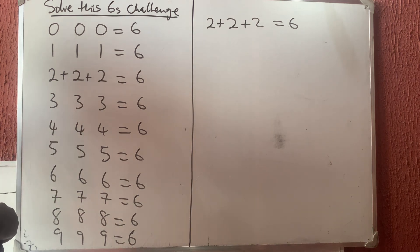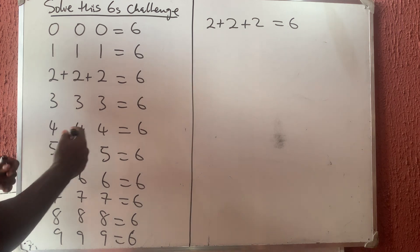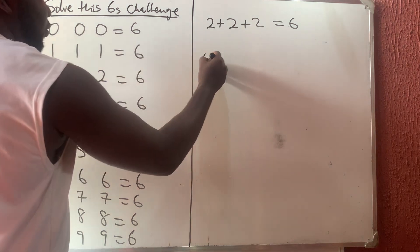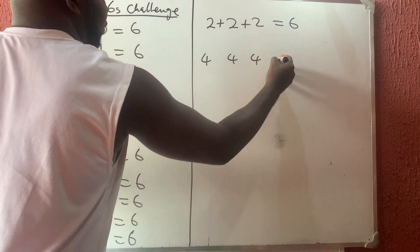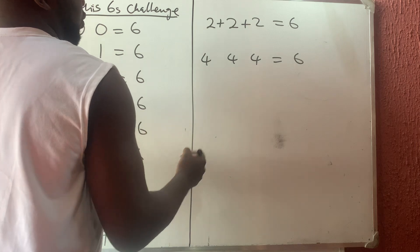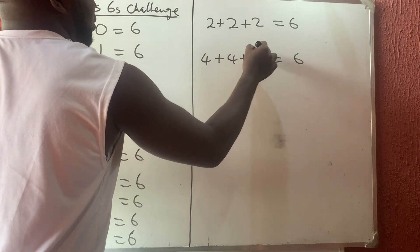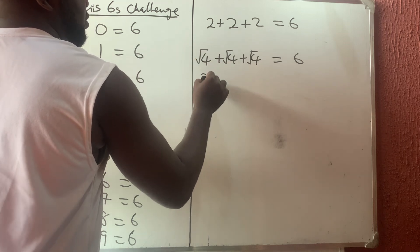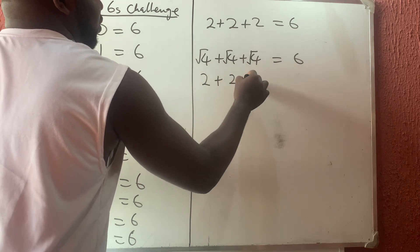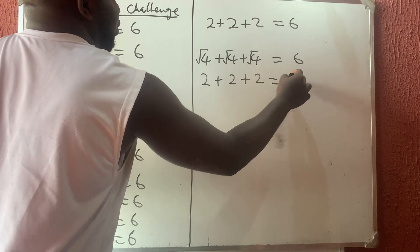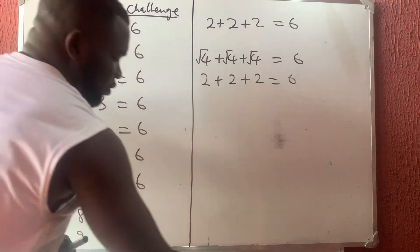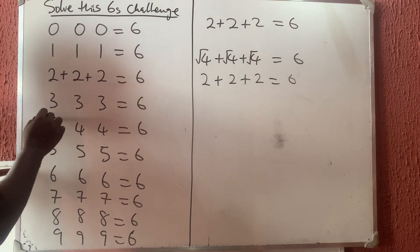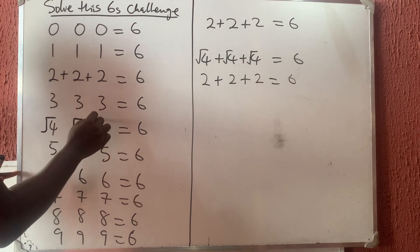What about four? We have four, four, four and we want to get six. Do not introduce any number. What if I put square root here, square root here, square root here? Square root of four is two, plus square root of four is two, plus square root of four is two — giving us six.